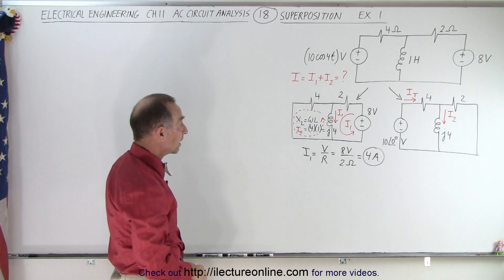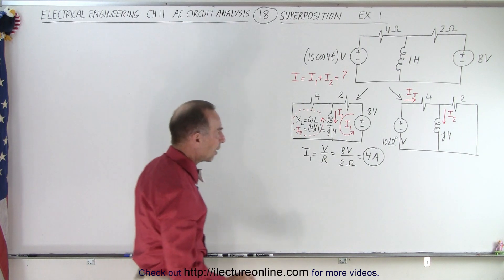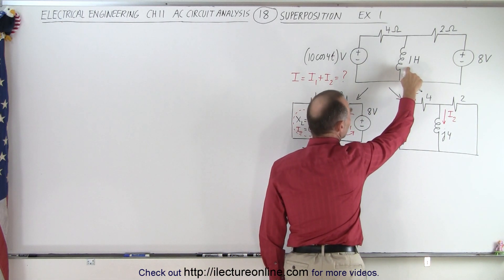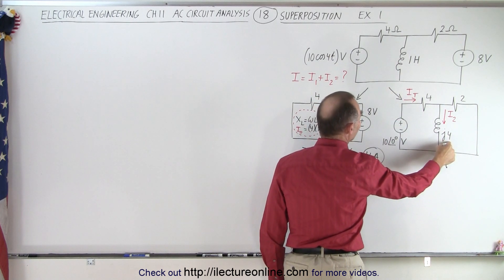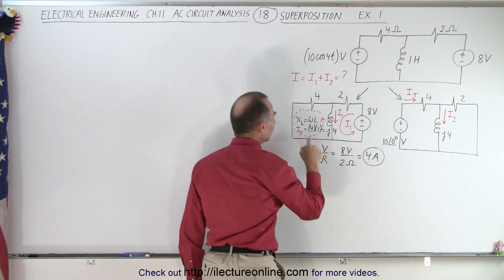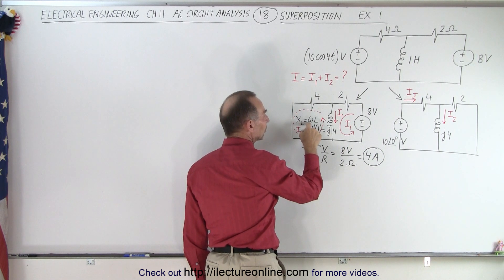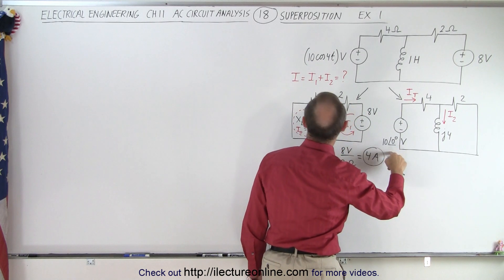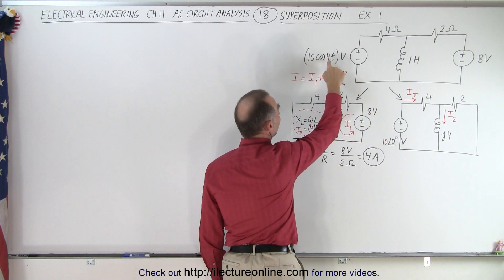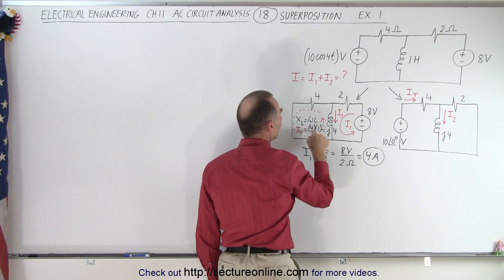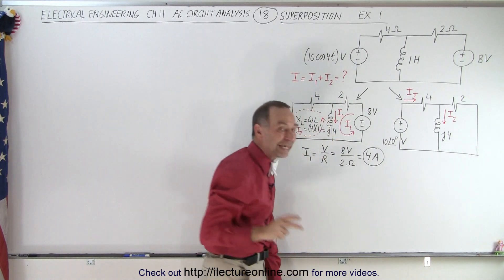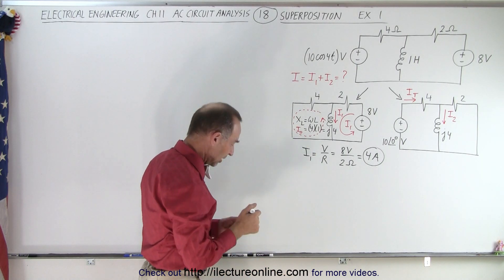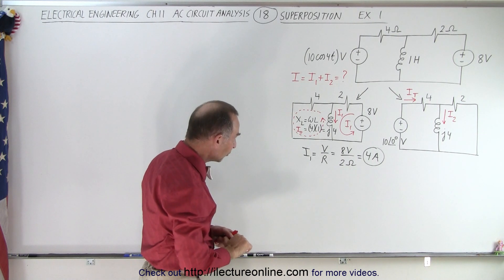Now for the second circuit, we have an alternating voltage supply. We have a 1 henry inductor. To find the reactance — the J4 reactance — we multiply the angular oscillation omega times the inductance. From cosine of 4t, omega equals 4, the inductance is 1, so multiplied together we get a J4 reactance: magnitude of 4 with a phase angle of 90 degrees, voltage ahead of the current.